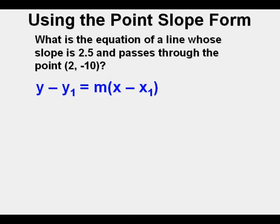We now will apply the point-slope form of linear equations. The 2.5 is substituted for m. The 2 in the coordinate pair, or our known x value, is substituted for x1. And finally the y coordinate negative 10 is substituted for y1 in the equation.